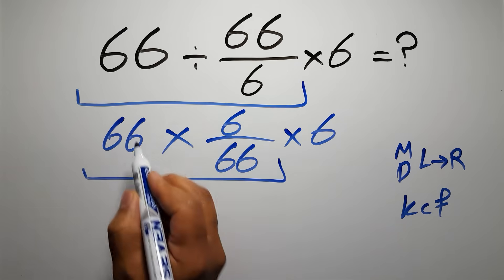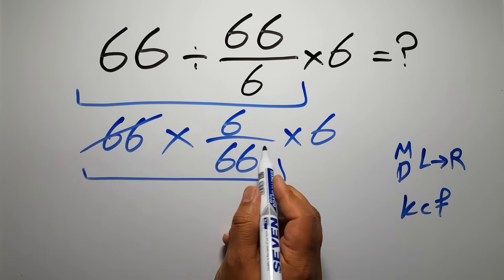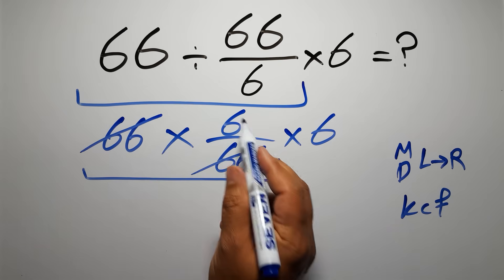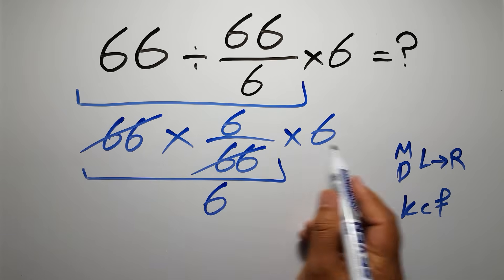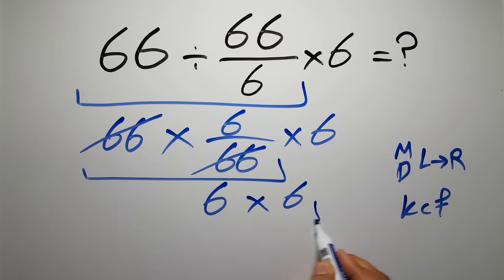We can easily cancel this 66 and this 66. So here we have just 6. And 6 times 6 gives us 36.